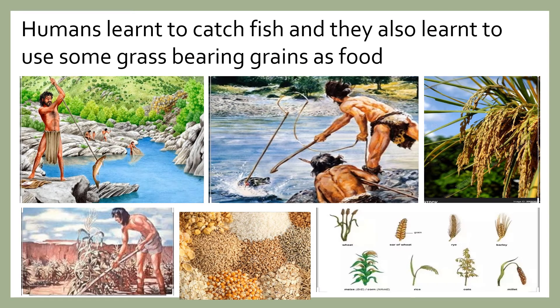Humans also learned to catch fish in streams and lakes. They noticed that some grass-bearing grains had grown naturally and learned to use them as food — cereals like rice, wheat, and barley obtained from such plants. Gradually they also learned to grow them. So early humans learned to fish and also learned to use grass-bearing grains as food.